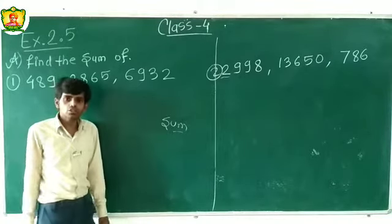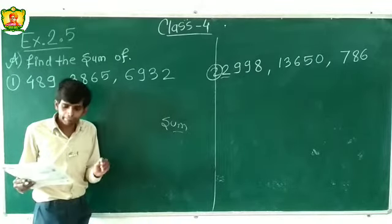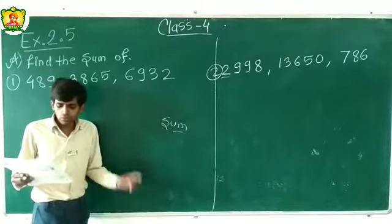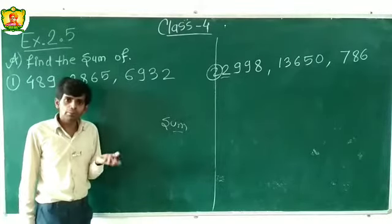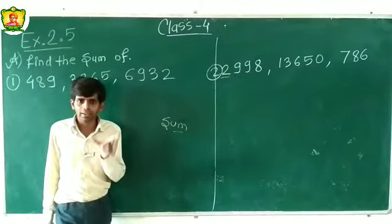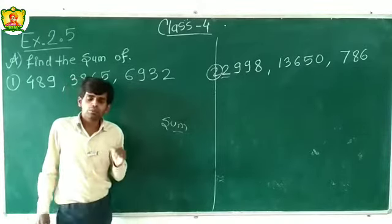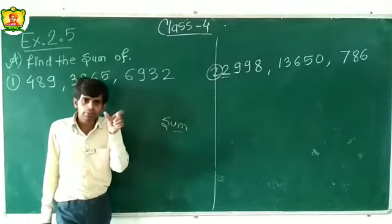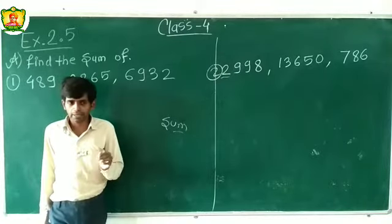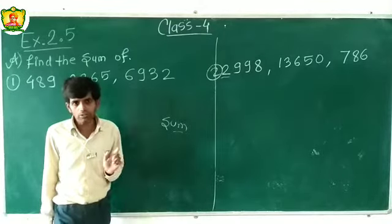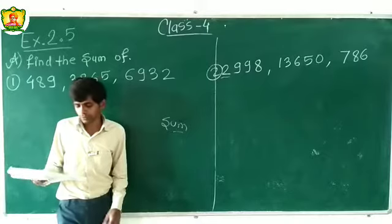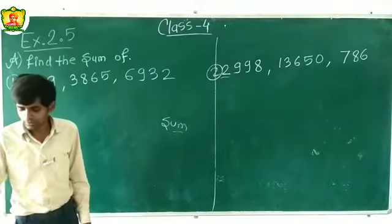Question C says 'find the number which is more than / less than.' More than means we add — when we add a number it increases. Less than means we subtract — when we subtract, the number reduces. So wherever you see 'more than,' do addition; wherever you see 'less than,' do subtraction. Always remember this.